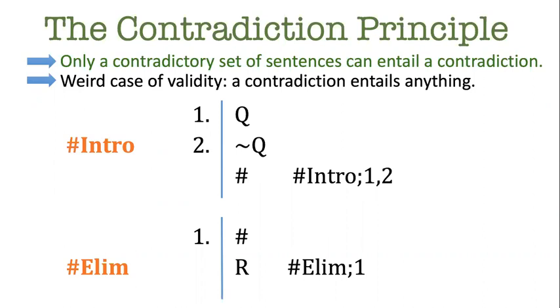It's easy to understand these rules if you remember a couple of things. One is the contradiction principle from the textbook, which says that only a contradictory set of sentences can entail a contradiction.